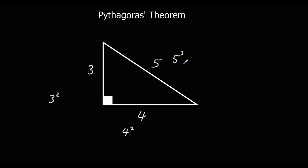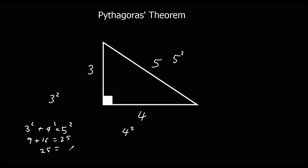3 squared plus 4 squared is equal to 5 squared. I know this one's true because this is a famous right-angled triangle. So 3 squared plus 4 squared equals 5 squared, and this works for any right-angled triangle.